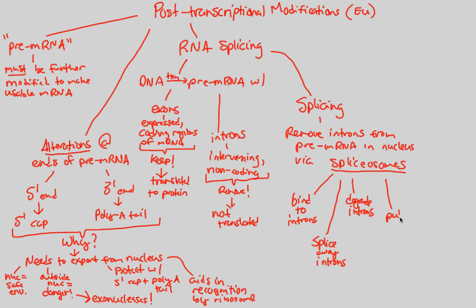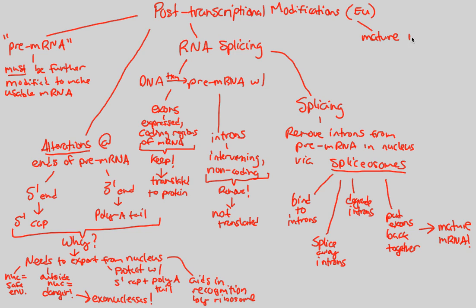After splicing out the introns, the spliceosomes put the exons back together. When an intervening sequence is removed, there is a gap between one exon and another, so those two exons are pushed right back together to create a nice, concise, mature mRNA. Once this is done, you have created a mature mRNA molecule — going from pre-mRNA, through 5' cap and poly-A tail modifications and RNA splicing via the spliceosome, to finally produce mature mRNA.